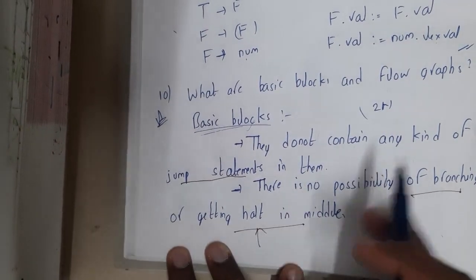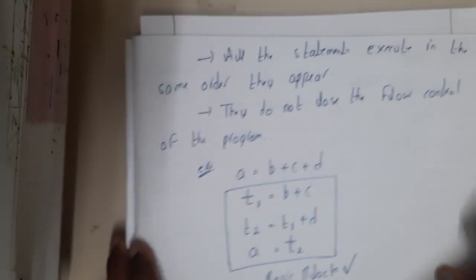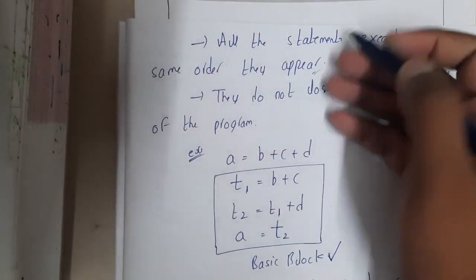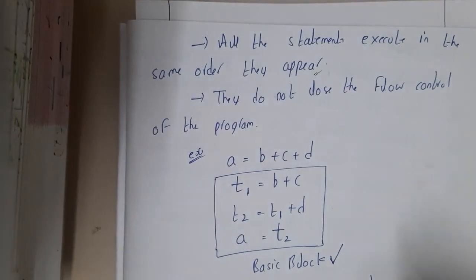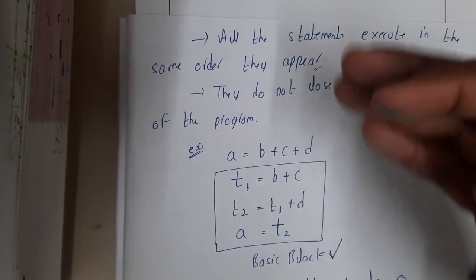Basically, halts are nothing but sudden exits. If they are not there, then we will be saying that this code is a basic block and all the statements should be executed in the same order as they appear. There should not be jumps in simple words. They do not lose the flow control of the program. Basically, the flow is top to bottom step by step.